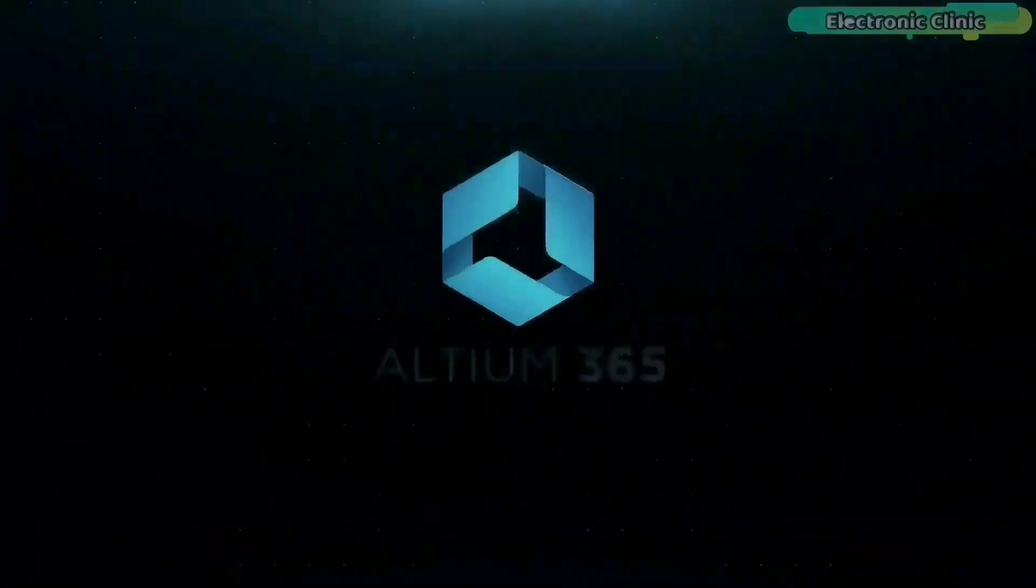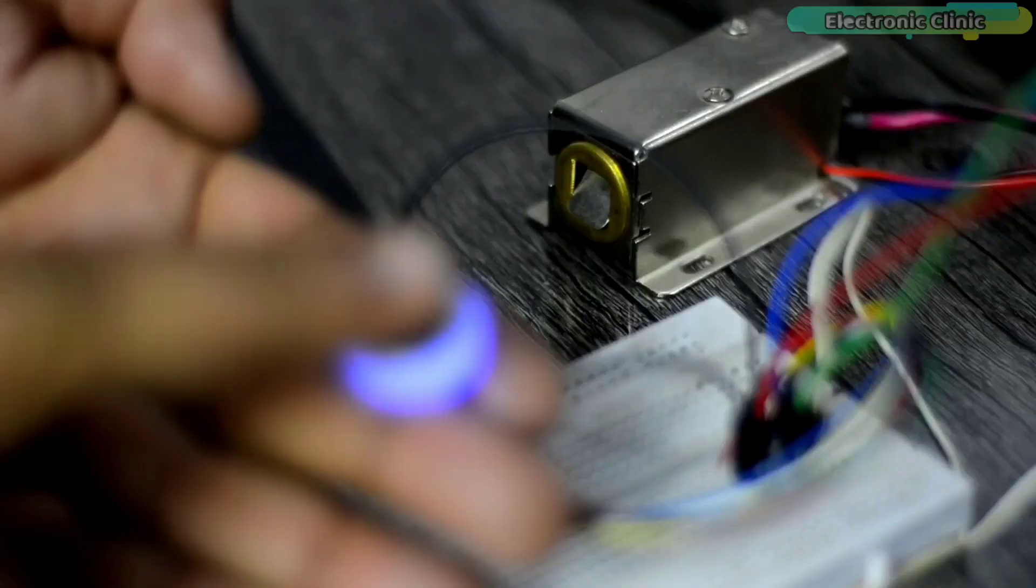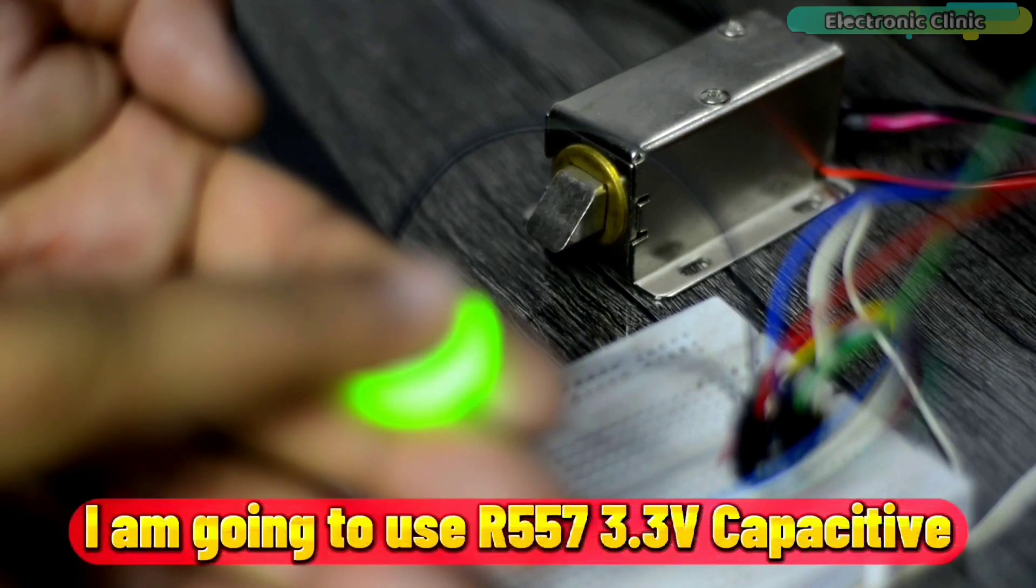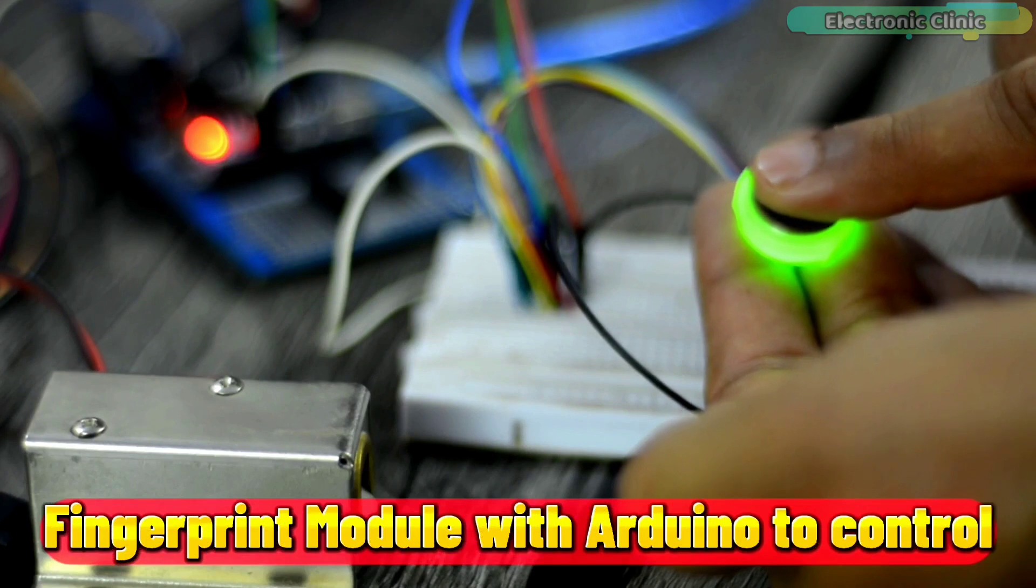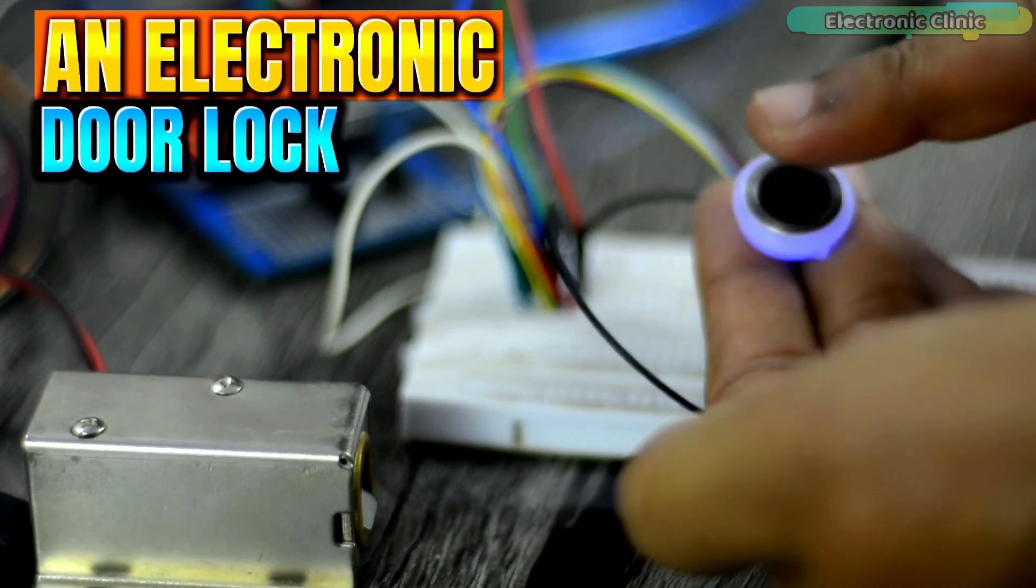This video is brought to you by Altium 365. In today's episode, I'm going to use the R557 3.3 volt capacitive fingerprint module with Arduino to control an electronic door lock.